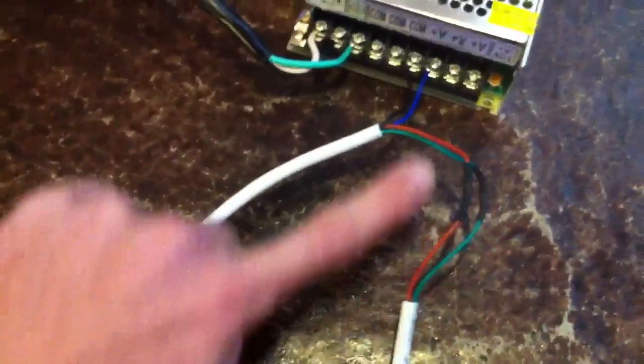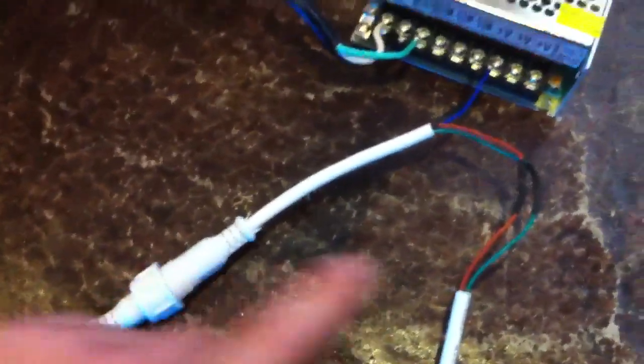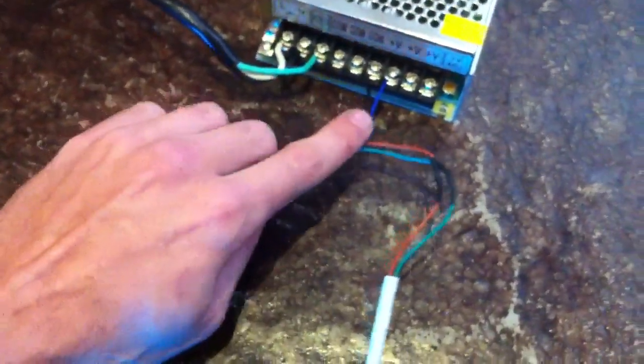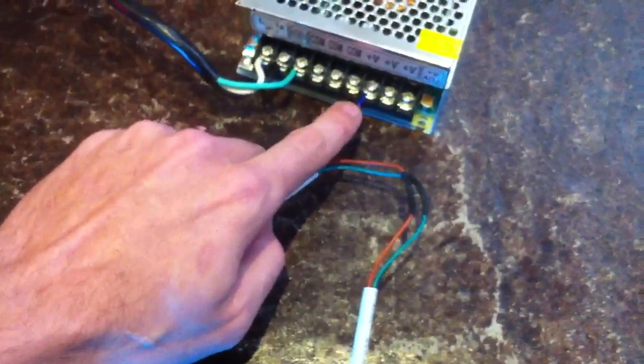So then on this lead coming out we now have our DMX data from the red and the green as well as our 12 volt DC power coming on our blue and our black. So that means now when we come into this extension we have power and DMX data together on one wire. This would be the wire that would run out to the display.